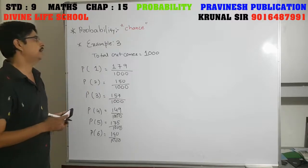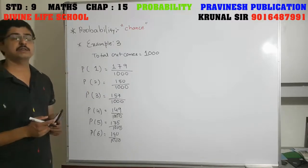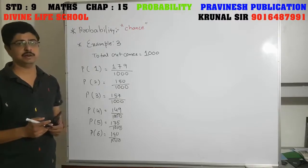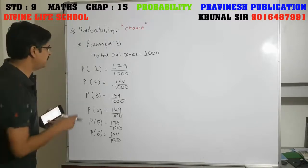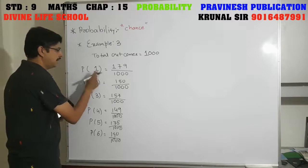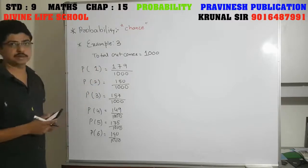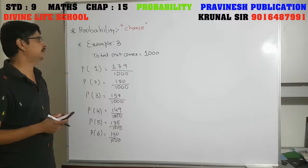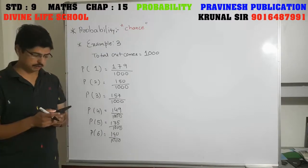This is a very easy chapter — a scoring chapter — but you need to write P every time and then in brackets whatever event they have asked. This is the answer of example number 3.